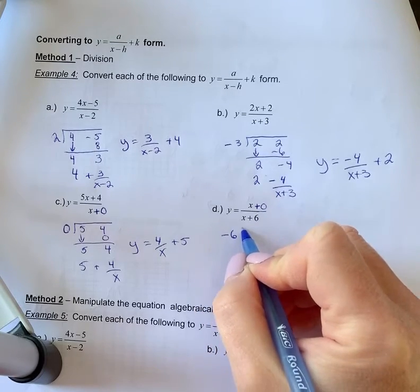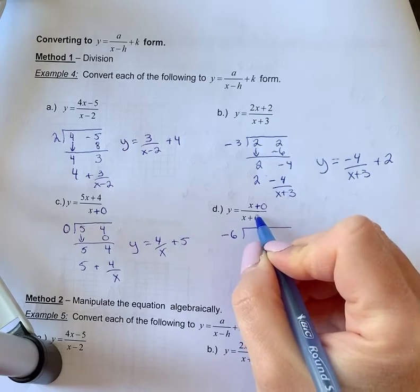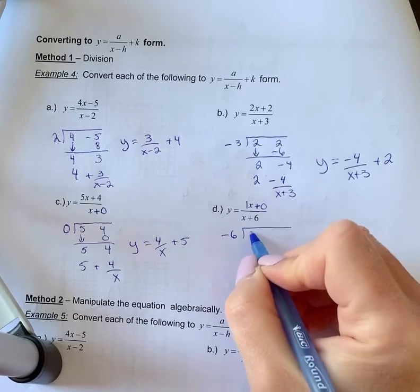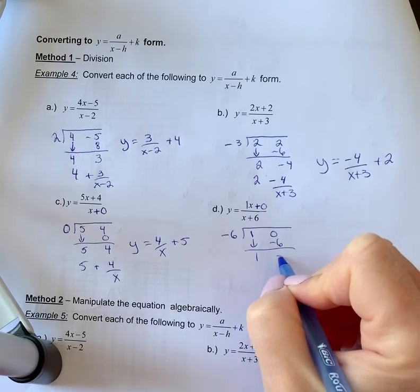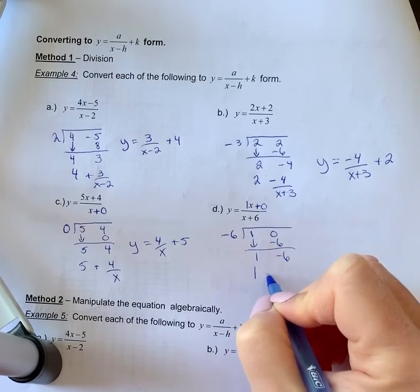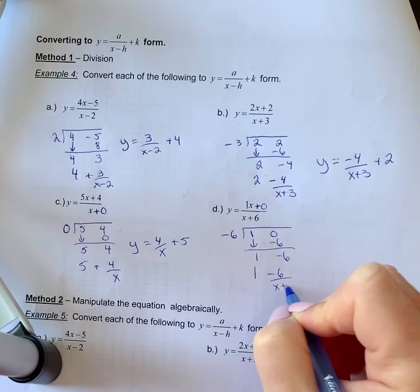So negative 6 is out front as that divisor, and then I have my coefficient of 1 and 0. And now you can use your synthetic division, and you've got 1 minus 6 over x plus 6.